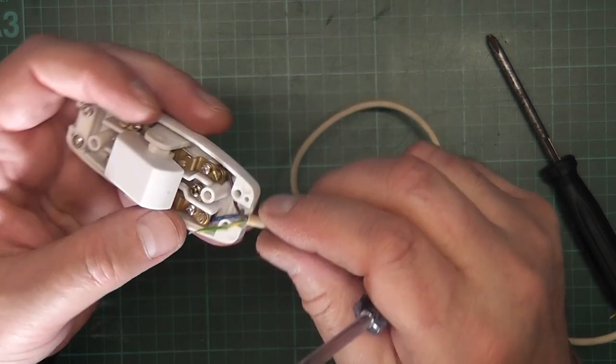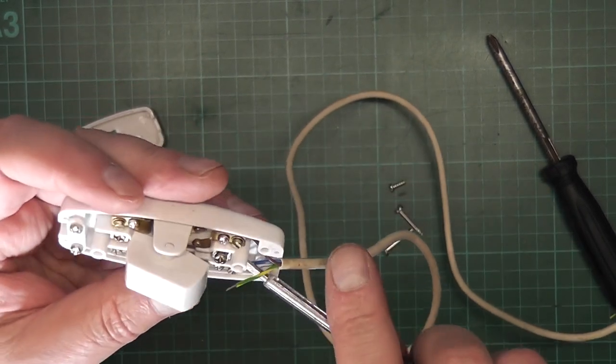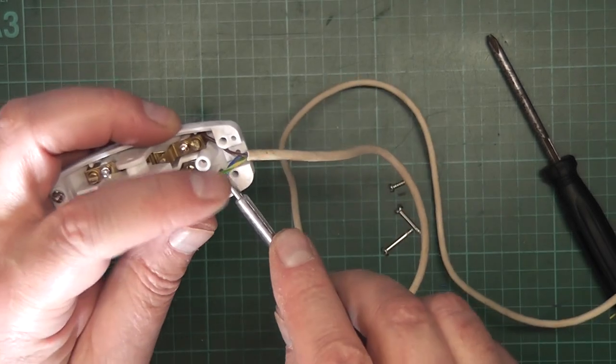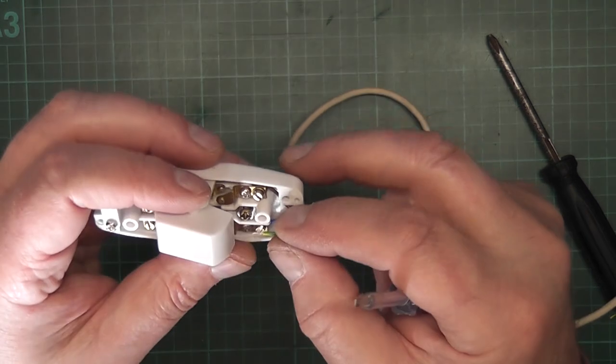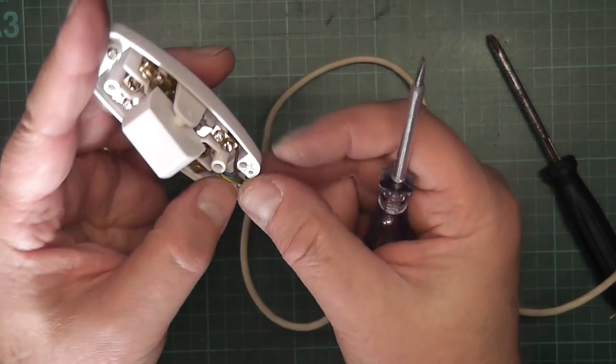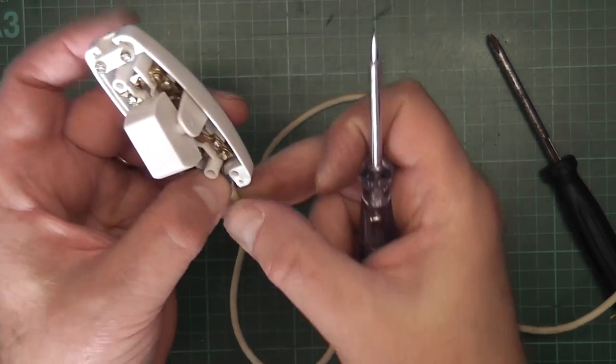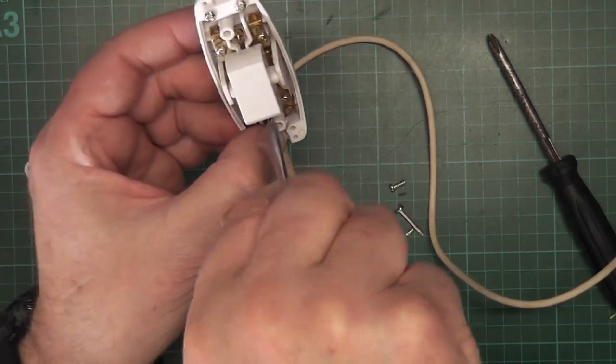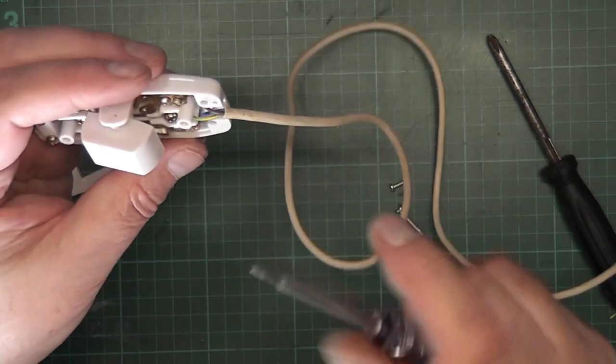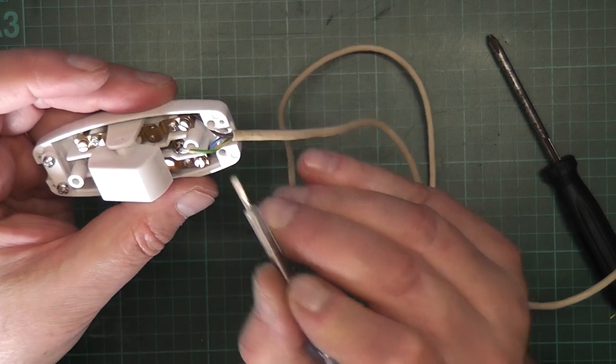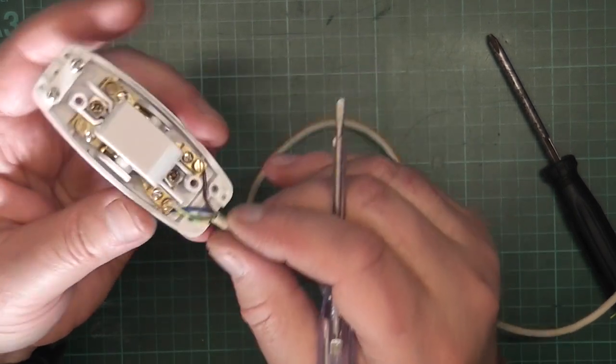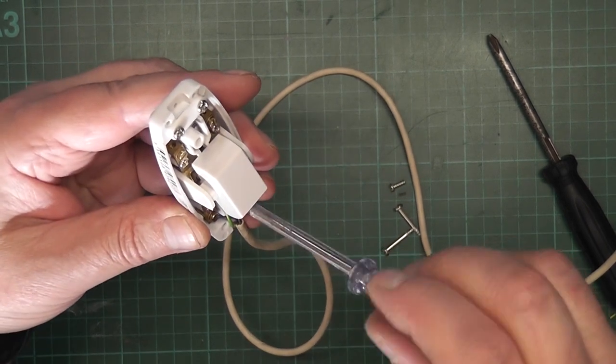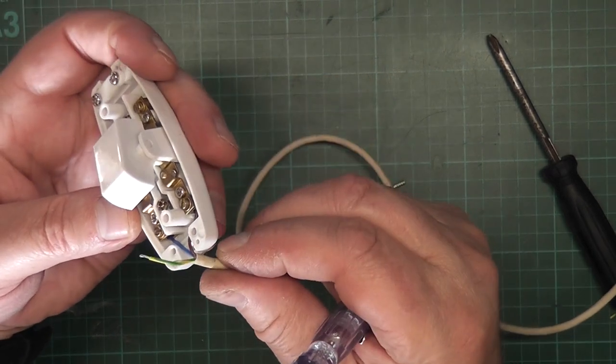Then in the center you have the earth or the ground. So what we do then is we'll just bend this over ever so slightly and just see if we can push it into place. There we go, it's gone into place. Holding it there, just screw it down. That didn't work, so do it again. Always make sure before you put it back together that the connections are in good and tight.